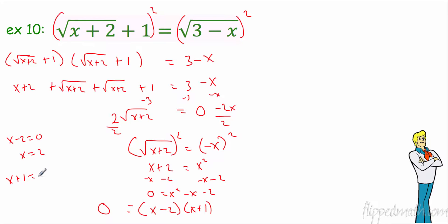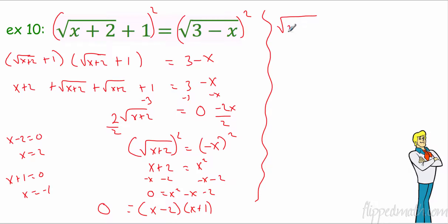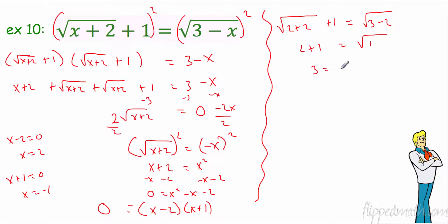By the zero product property: x minus 2 equals 0 so x equals 2, or x plus 1 equals 0 so x equals negative 1. We have two answers and we know Mr. Brust throws out some shady answers, so we need to check. For x equals 2: square root of 2 plus 2 plus 1 — that's square root of 4 plus 1, which is 3. But the right side is square root of 3 minus 2, which is 1. So 3 does not equal 1 — x equals 2 is an extraneous answer and it doesn't count.